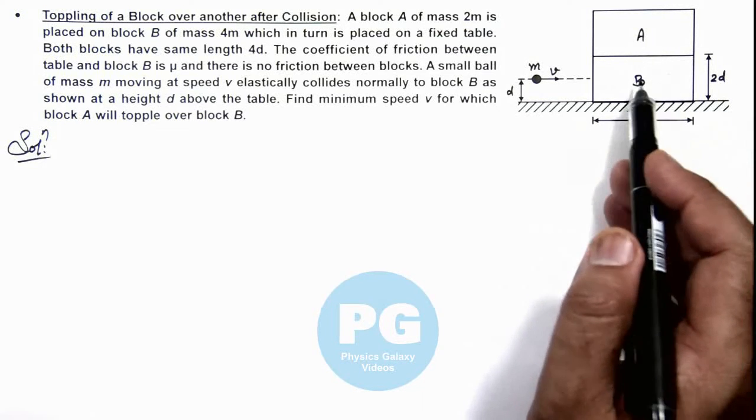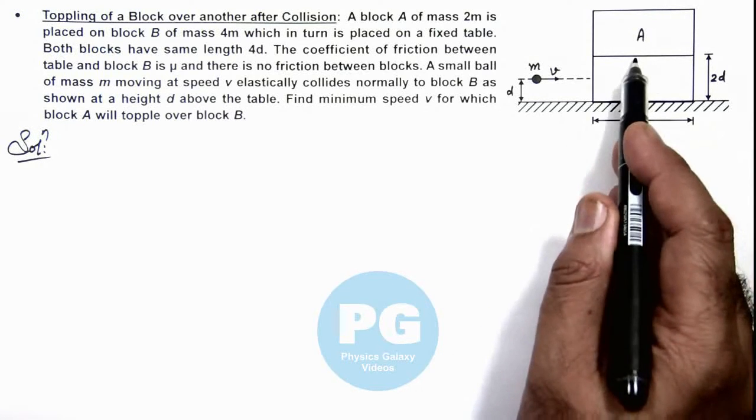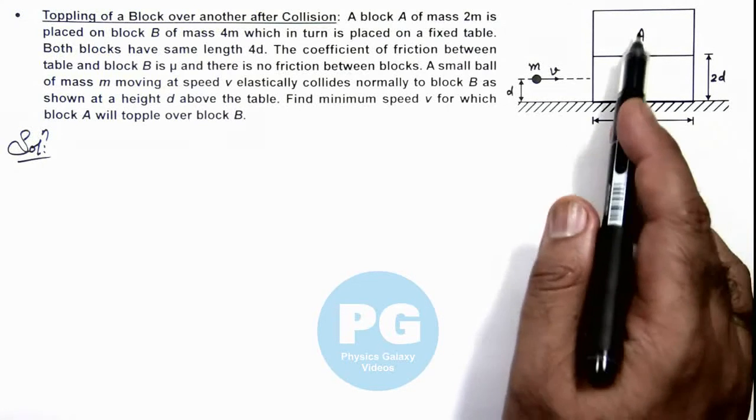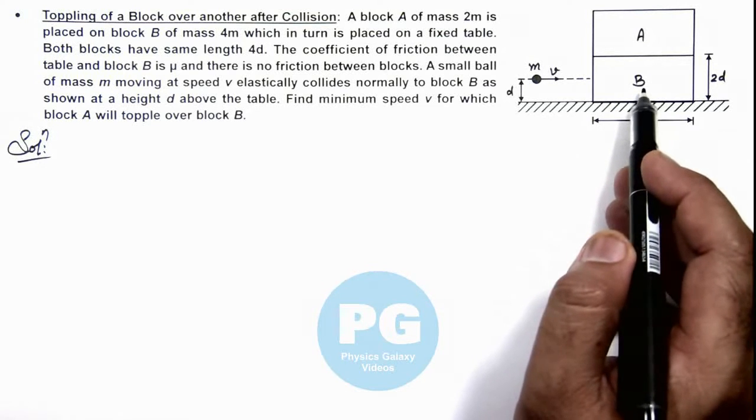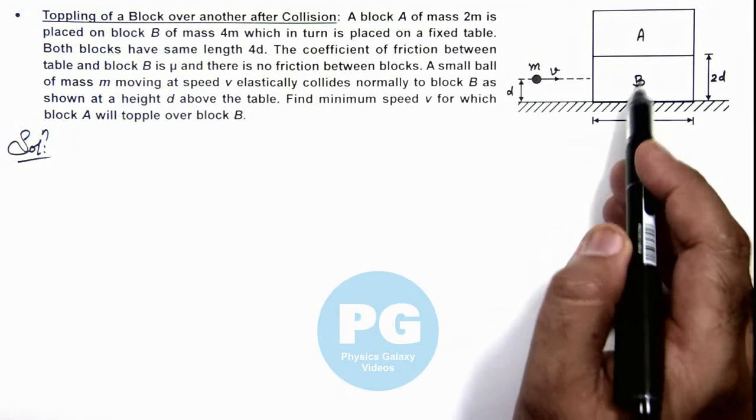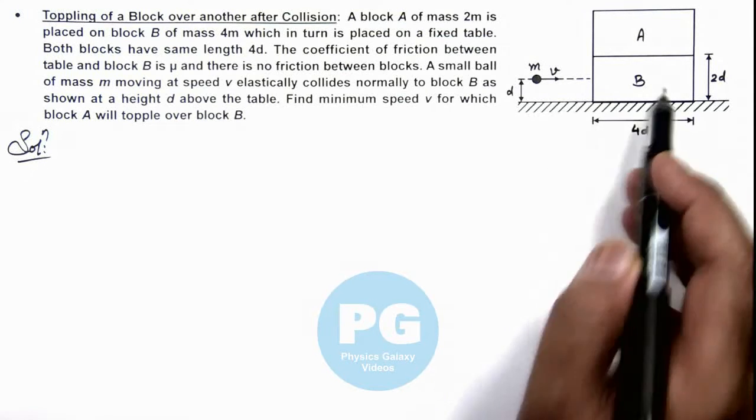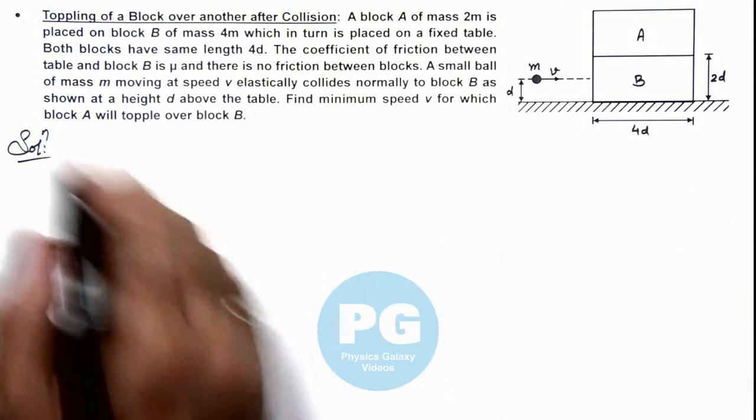So if B will travel a distance 2d that is half of this length then we can say the center of mass of A will topple over B. So here we need to find the condition under which B will travel a distance 2d toward right.